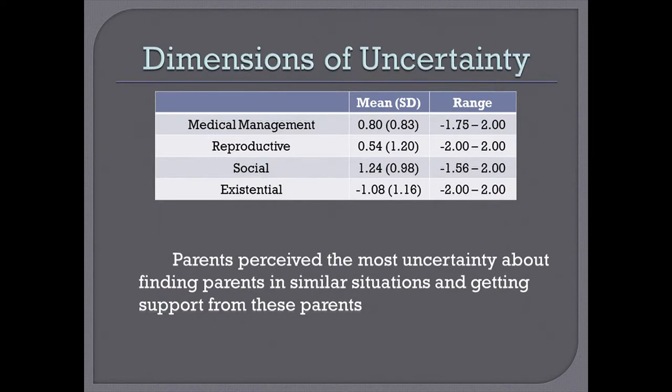Our scale set out to have seven domains, but a factor analysis revealed that four domains better captured the uncertainty parents were facing. Medical management included things like making treatment decisions and understanding prognosis. Reproductive uncertainty was fairly straightforward — the belief that this could happen again, not only to themselves but to other family members who had asked about their chances. Social uncertainty was the area parents were most uncertain about and expressed the greatest desire to resolve — things like 'I have trouble finding parents who share this situation with me' and 'I don't have an area for support.'